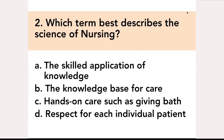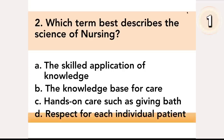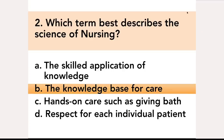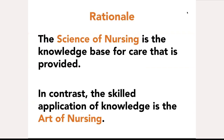Which term best describes the science of nursing? A. The Skilled Application of Knowledge, B. The Knowledge Base for Care, C. Hands-On Care such as Giving Bath, D. Respect for Each Individual Patient. Answer: B. The Knowledge Base for Care. The science of nursing is the knowledge base for care that is provided. In contrast, the skilled application of knowledge is the art of nursing.